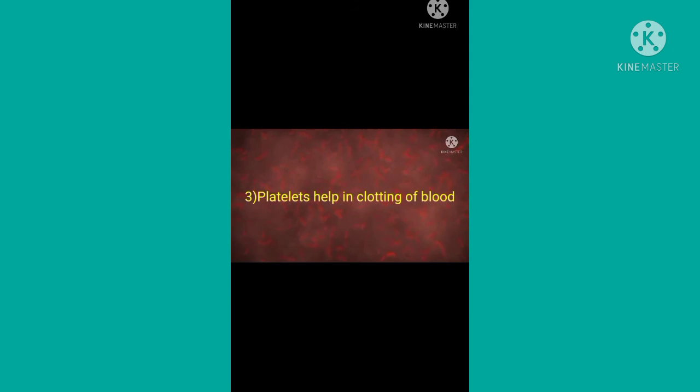Platelets are tiny particles that help in clotting blood. Plasma is a slight yellow colored liquid that transports nutrients and hormones to the different parts of the body.